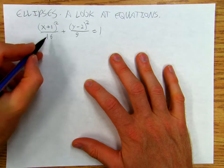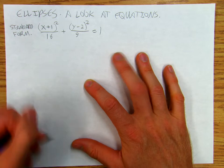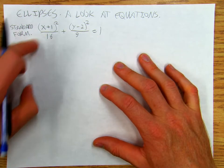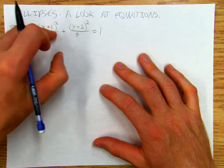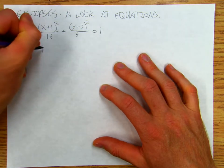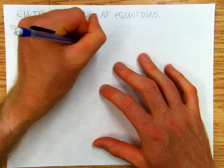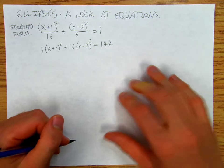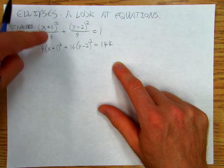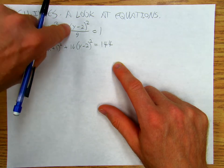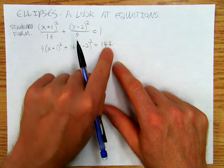So this is standard form, and now we're going to put this into another form, and then put it back into standard form. What we're going to do is multiply everything by 9 and by 16. So I get 9(x+1)² plus 16(y−2)² equals 144. I multiplied by 9 and 16, so the 16's canceled and the 9 was left over; the 9's canceled and the 16 was left over. And 1 times 9 times 16 is 144.